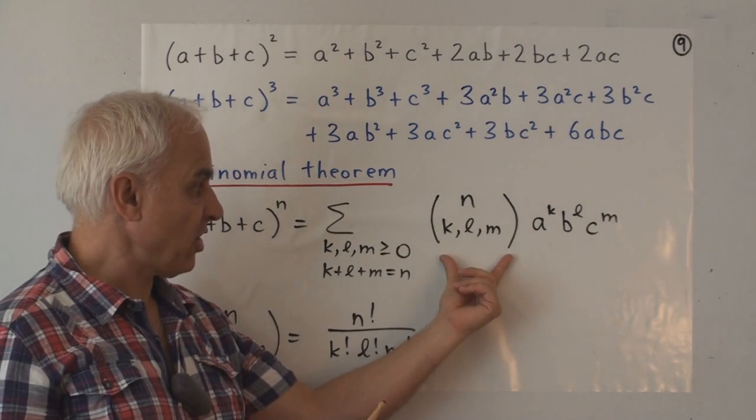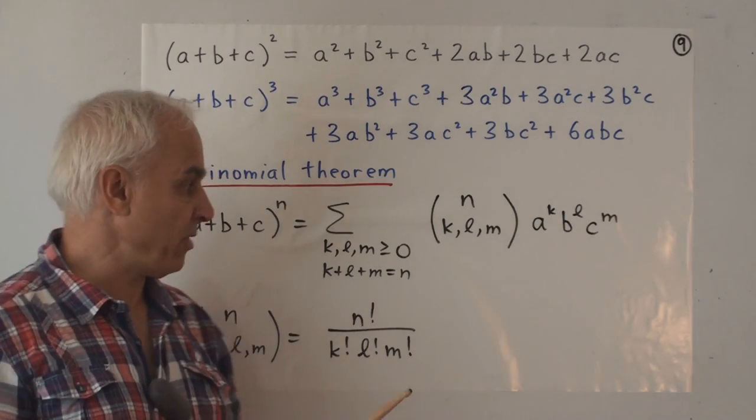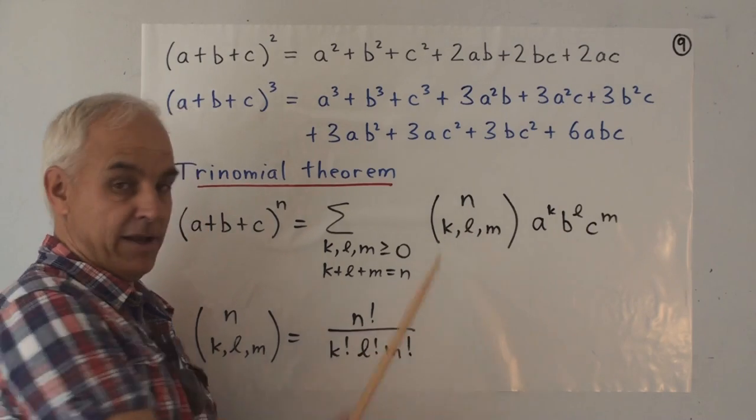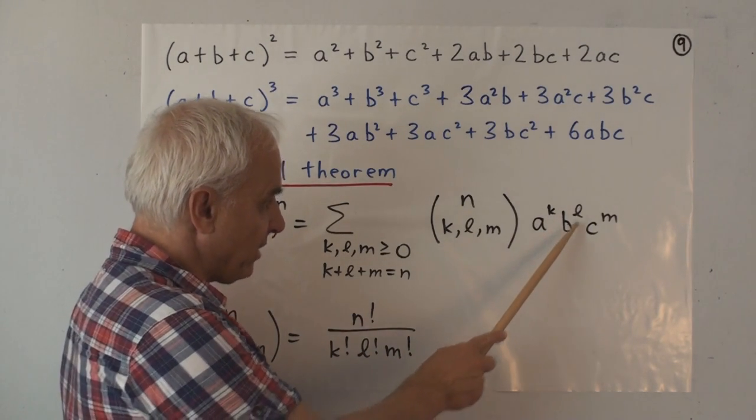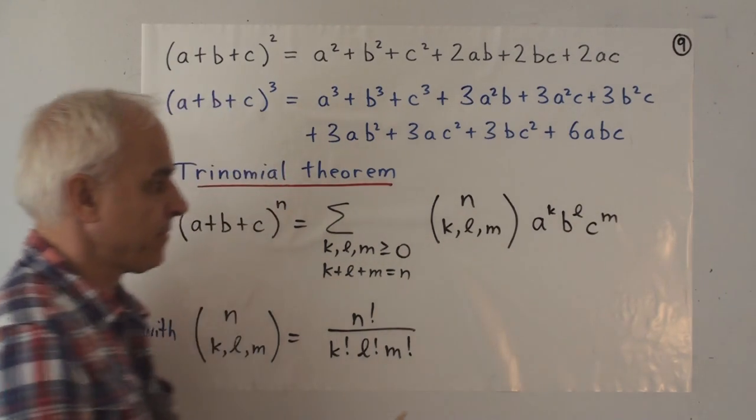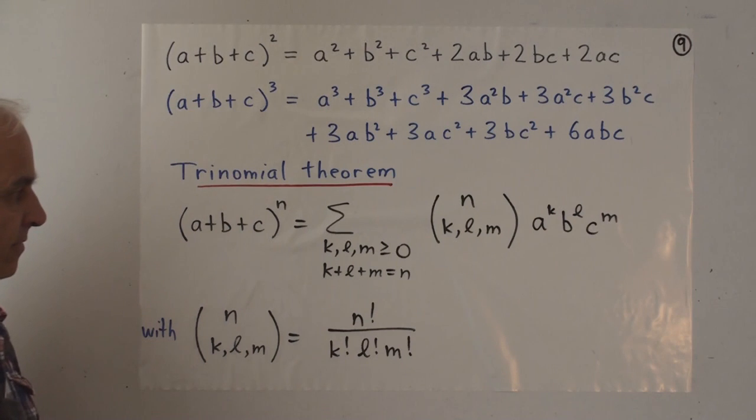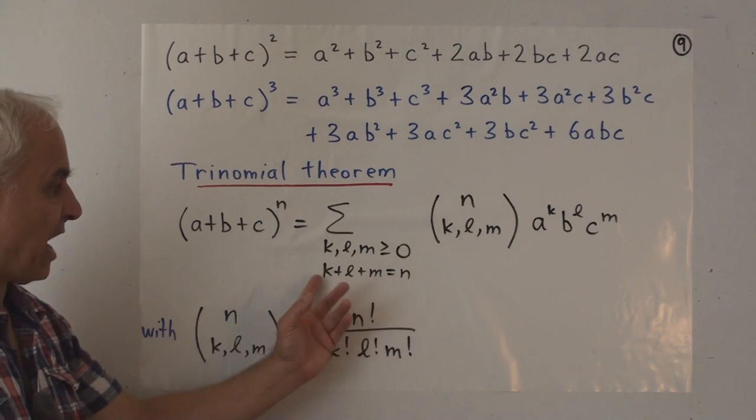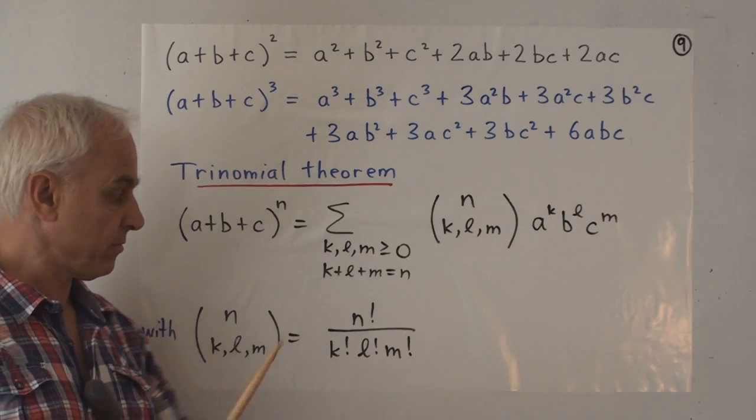And the coefficients are these multinomial coefficients, generalizations of binomial coefficients which we might call n choose k, l, and m, multiplied by a to the k b to the l c to the m. So the terms here are all of degree n. And there is one term for every way of writing n as a sum of three positive integers. Positive including zero.